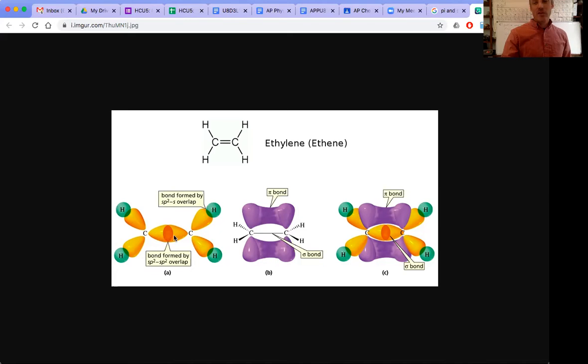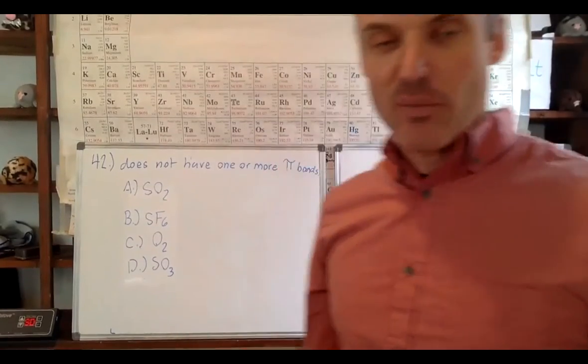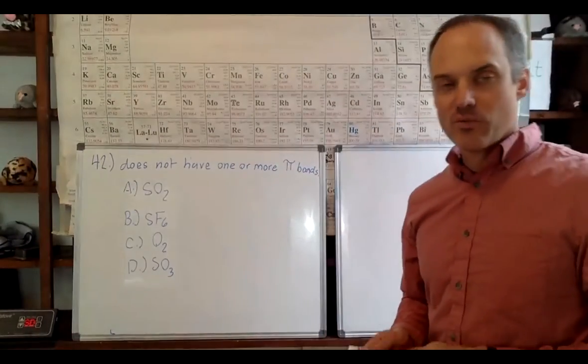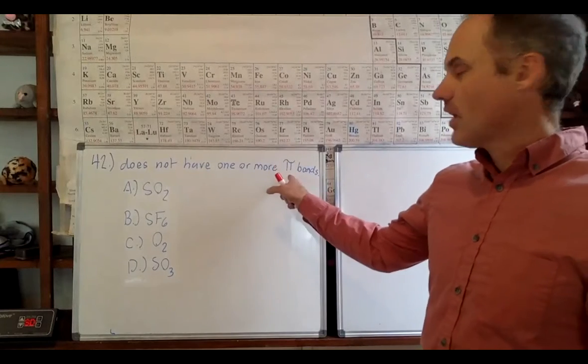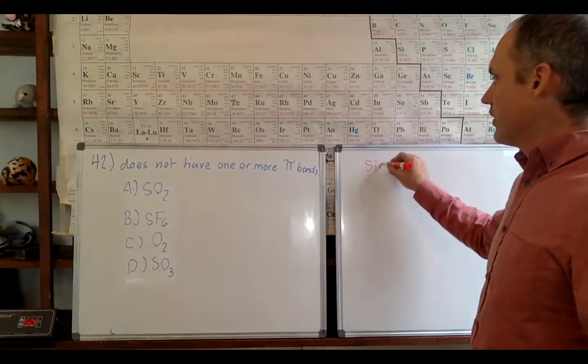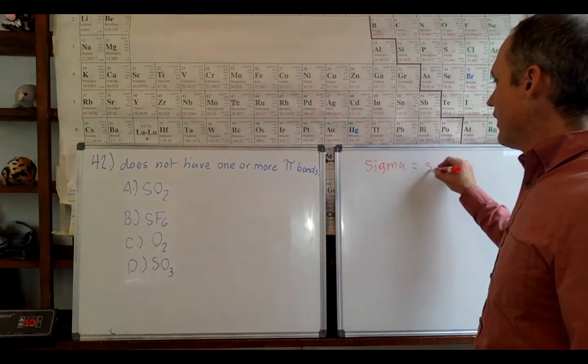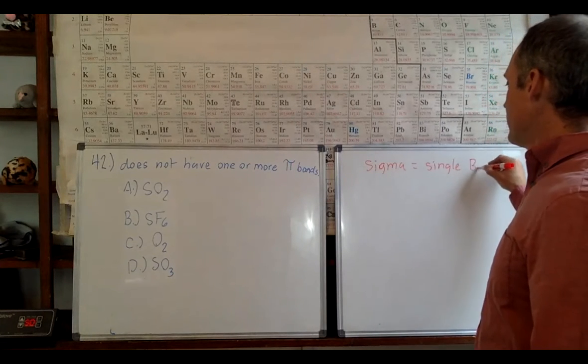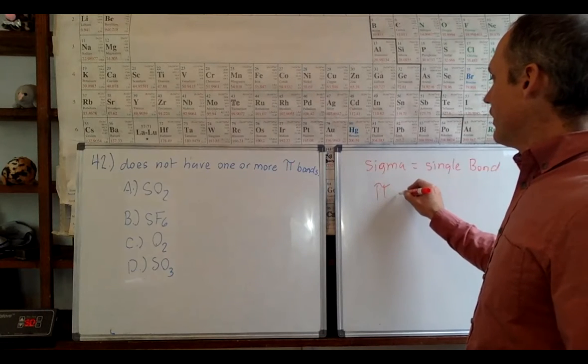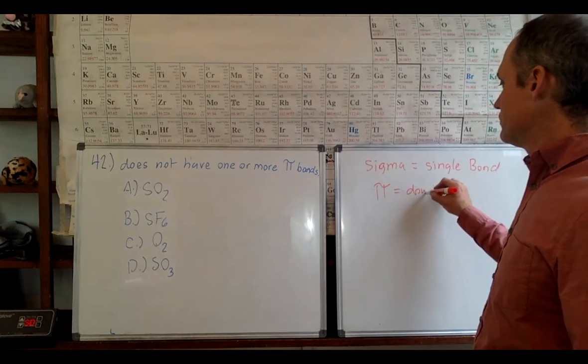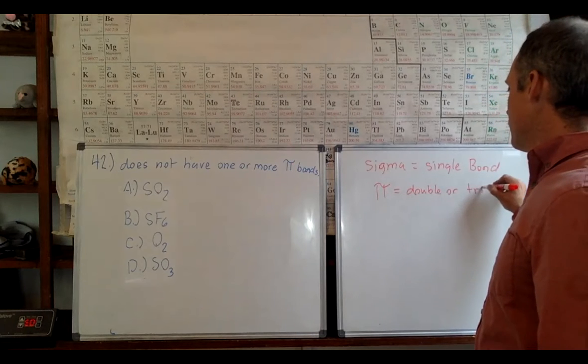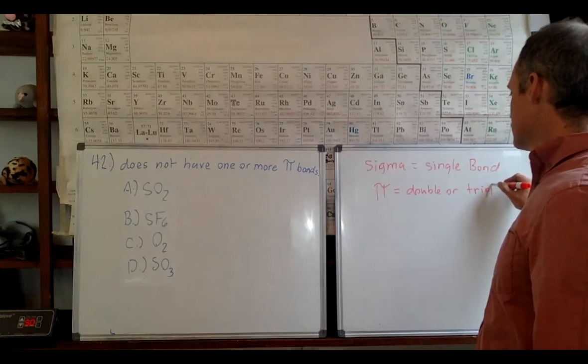So anytime you have a single bond it's always going to be a sigma bond - sigma for single, right? And pi for double or triple. So every bond has a sigma bond but not every bond has a double or triple bond which would be a pi bond. Okay, so just to review, sigma is a single bond and pi represents a double or triple bond.